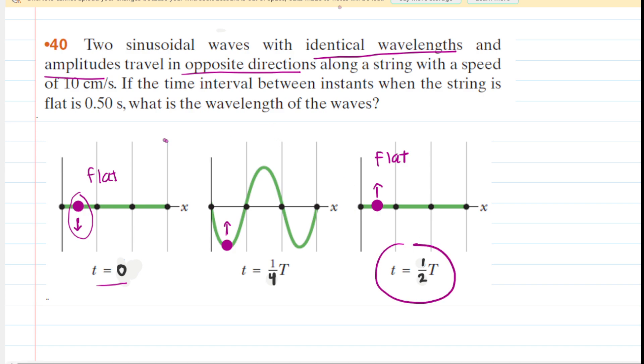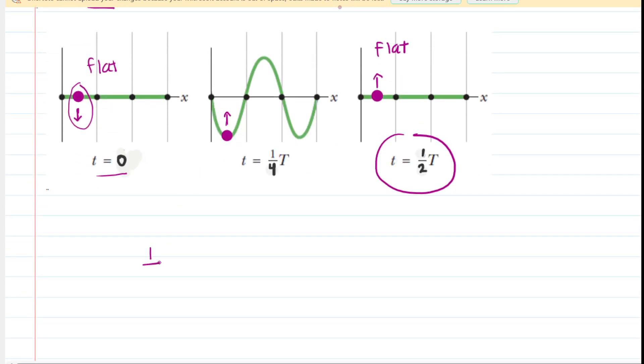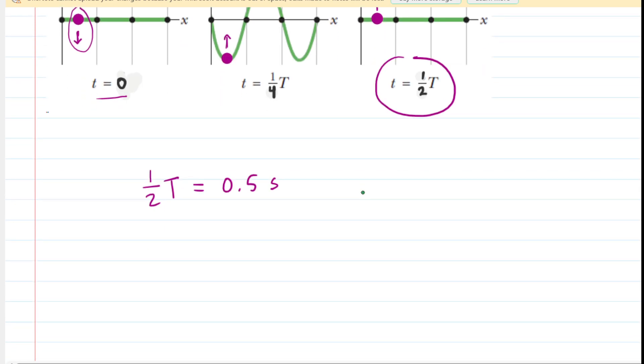But this question said that that time was half of a second. So what we are saying is that one half of the period is equal to half of a second. But we are more interested in the full period, not half of a period. So we multiply both sides of this equation by two, and we can see, after canceling, that the full period of the standing wave is one second.